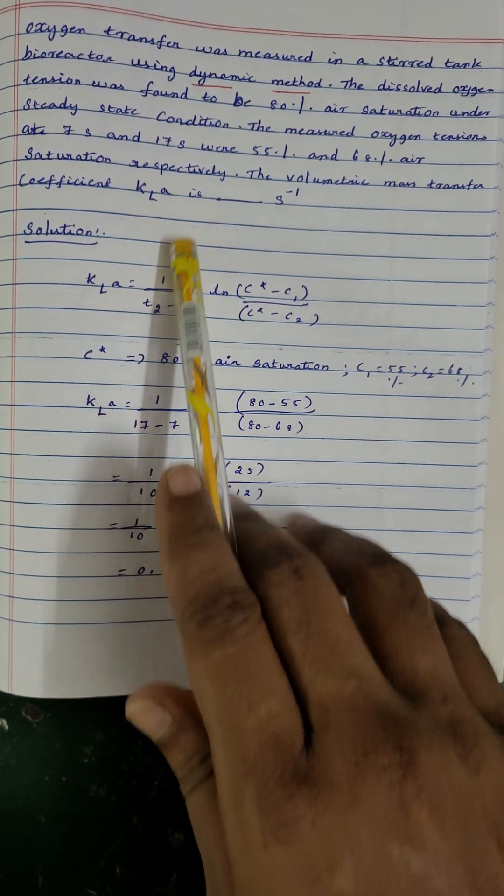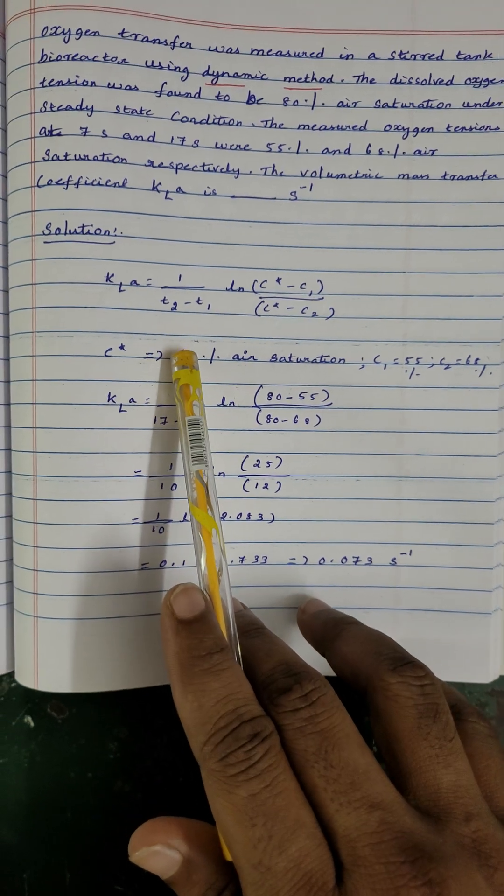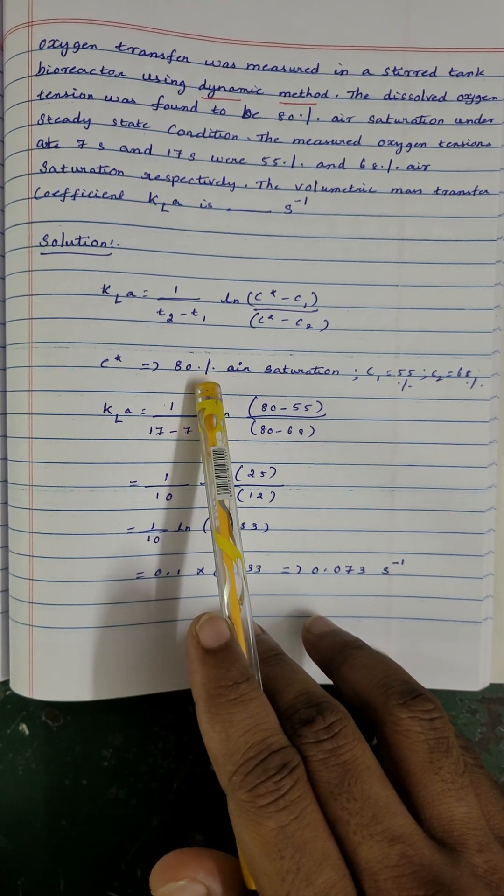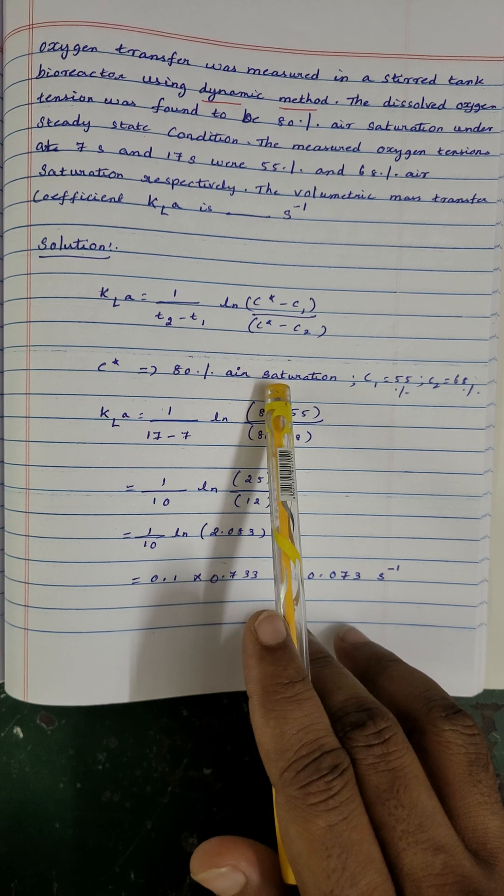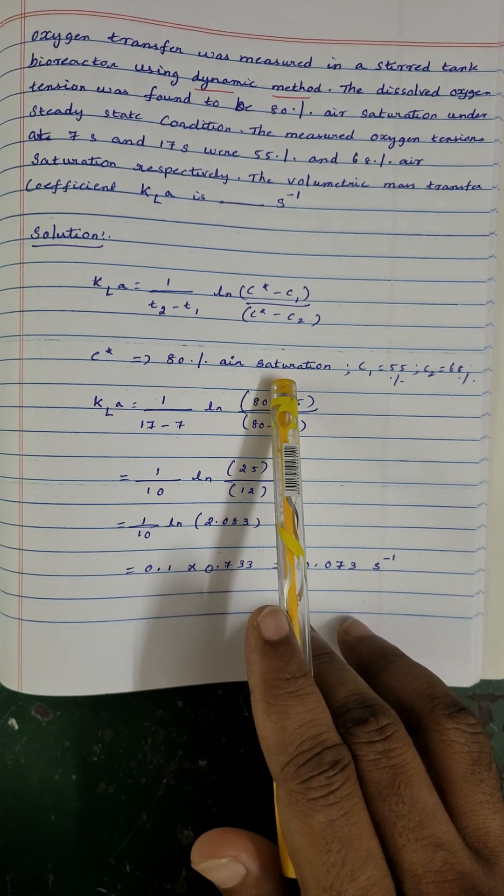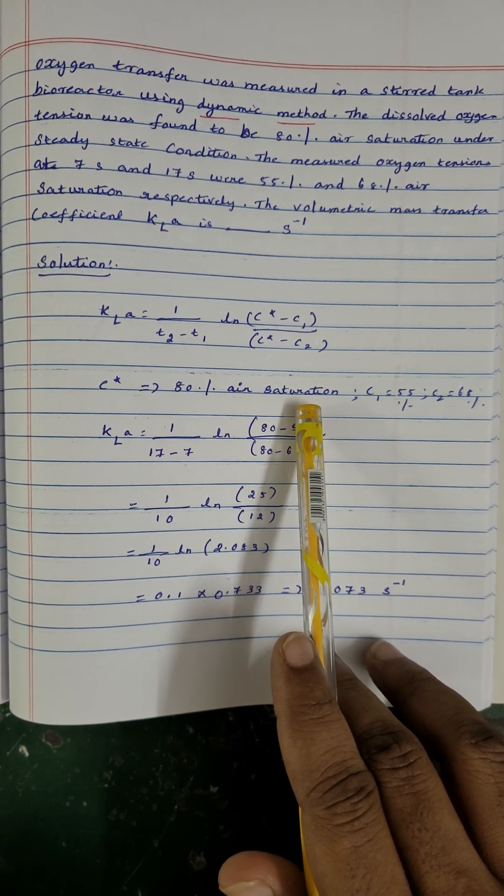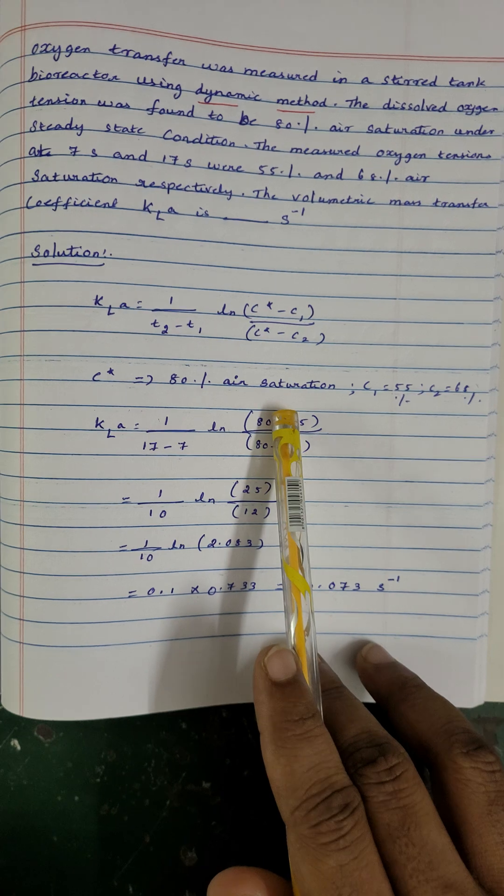So the solution: the formula which we have to use is KL is equal to ln of C star minus C1 divided by C star minus C2, the whole divided by T2 minus T1, where C star is 80% air saturation.